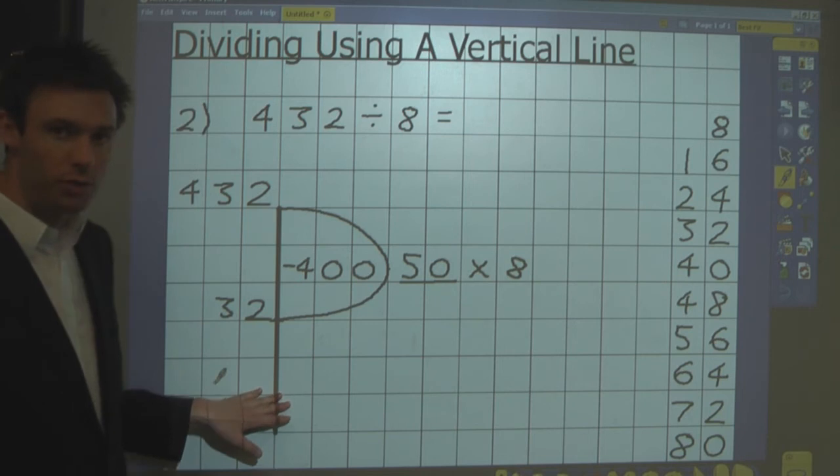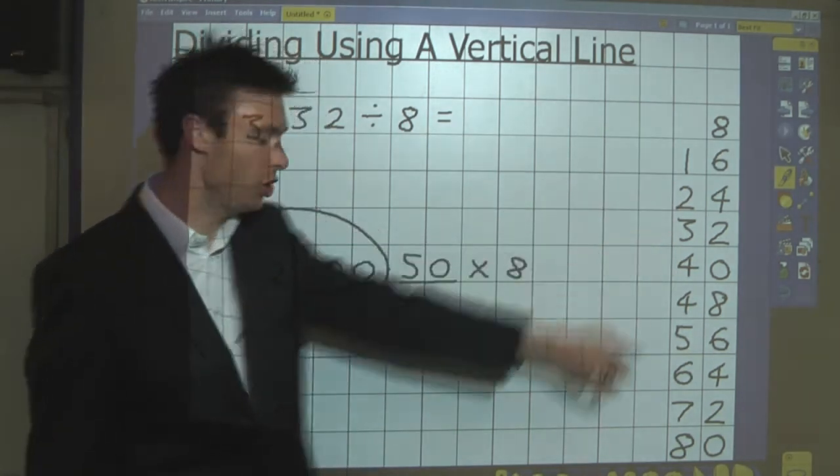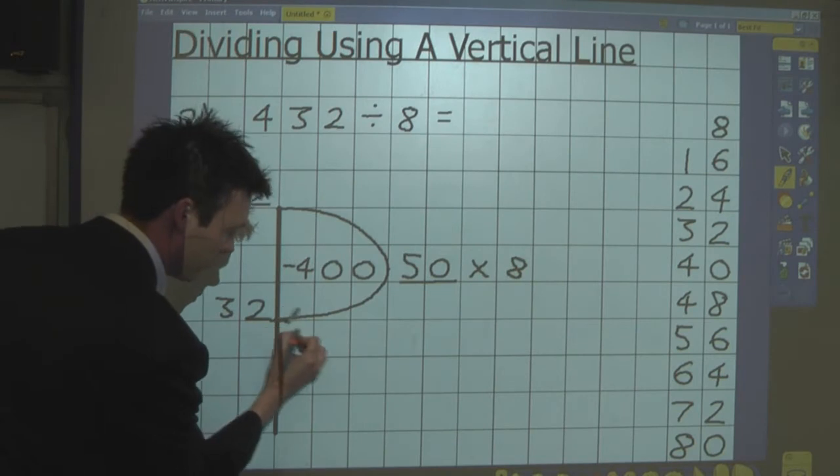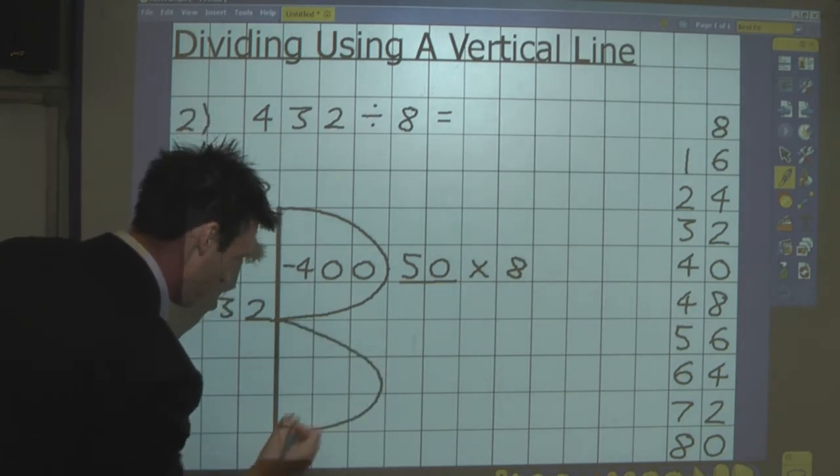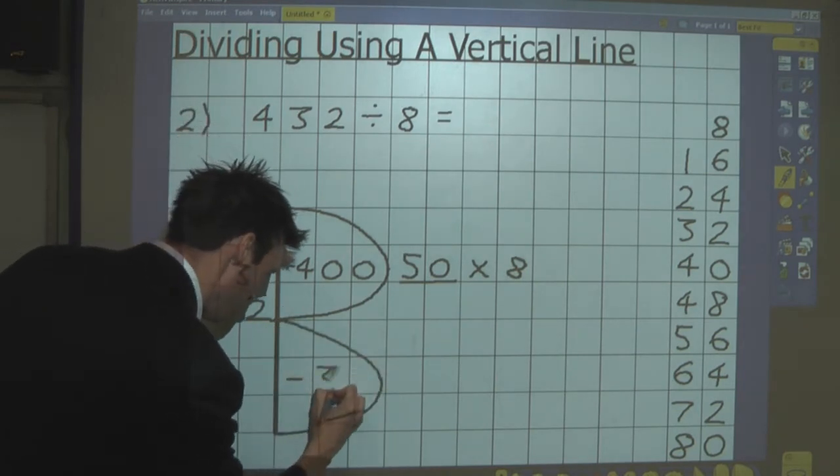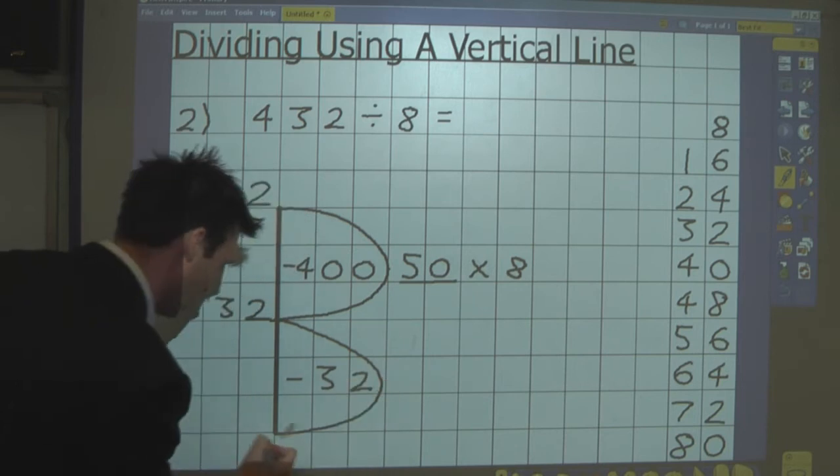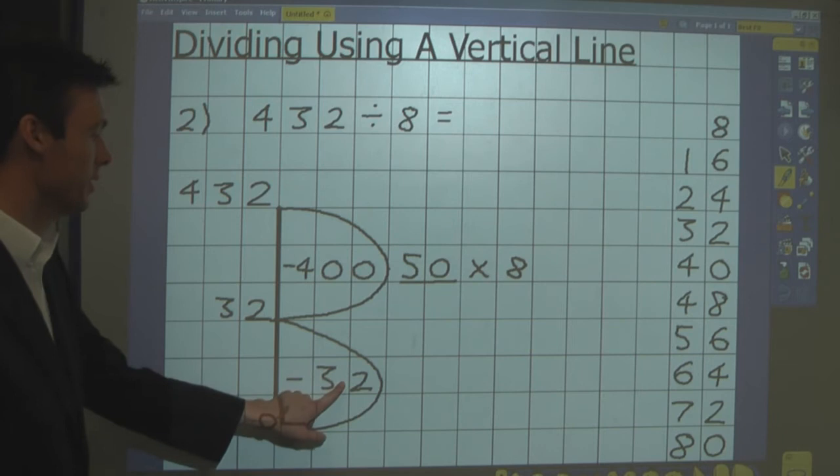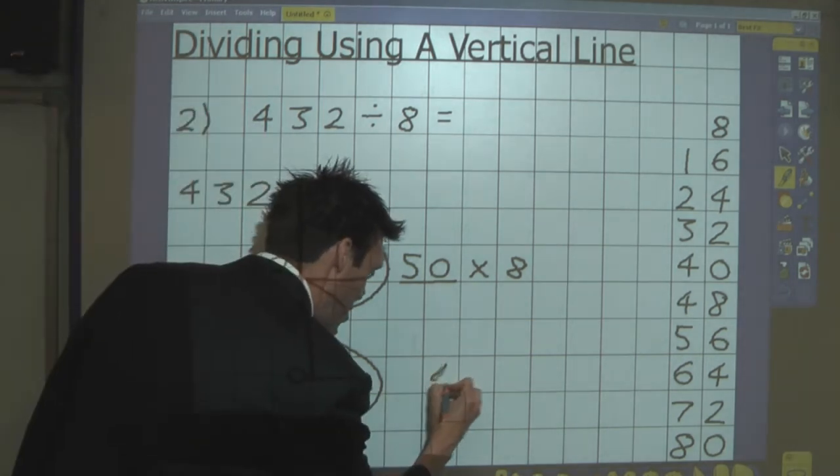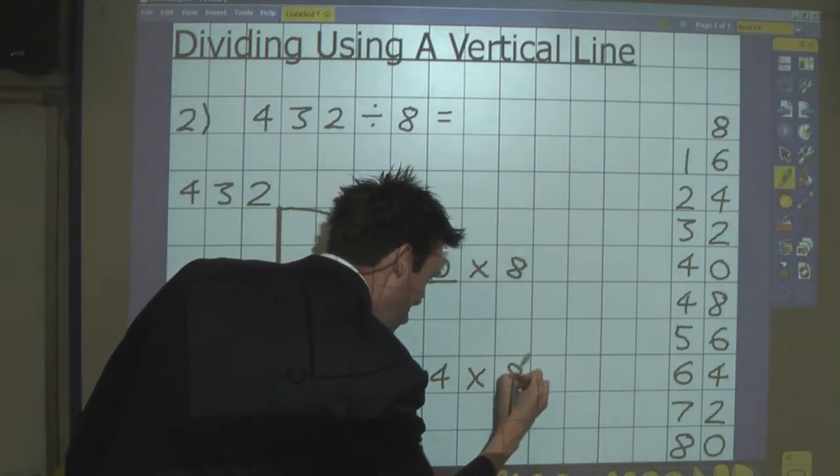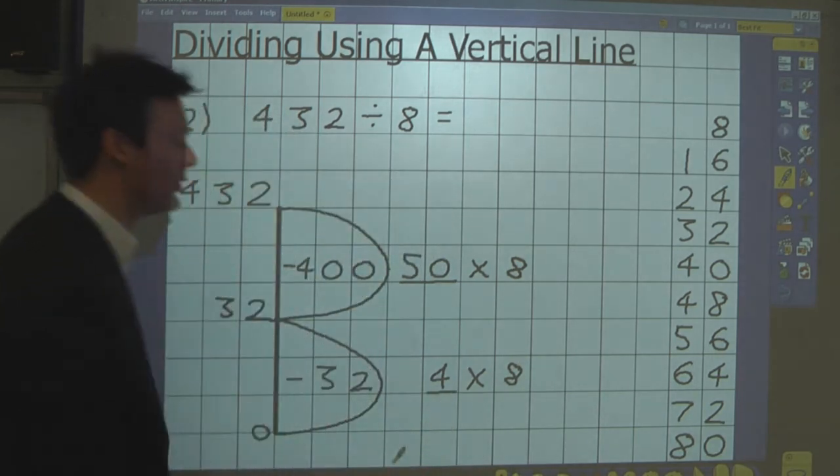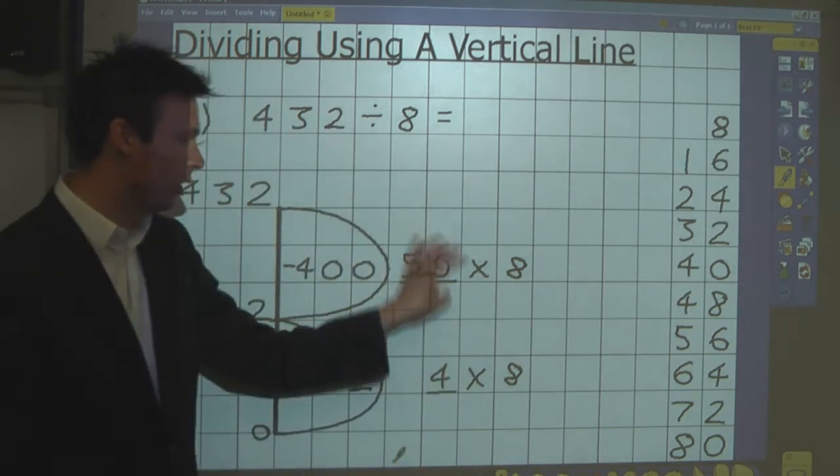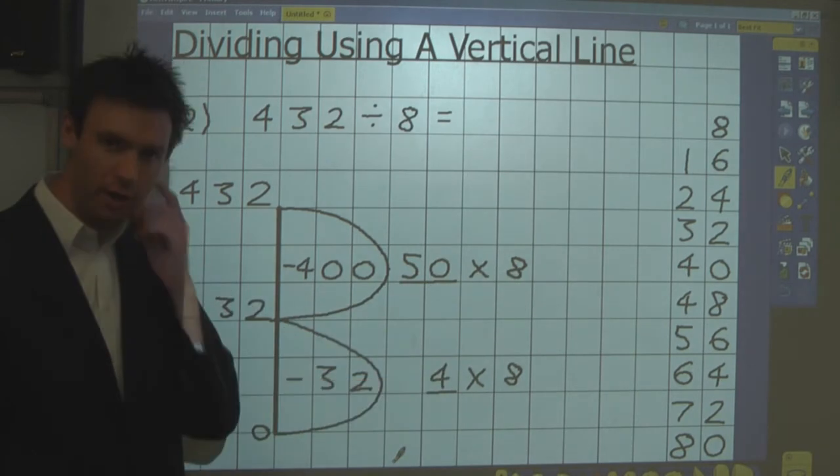Again, I use my knowledge of times tables to see what to take away next. I can take away 32, which will leave me with nothing. And that is the same as 4 lots of 8. And again, I underline the 4 so I can tell the difference between the lots of I'm taking away and the number I'm dividing by.